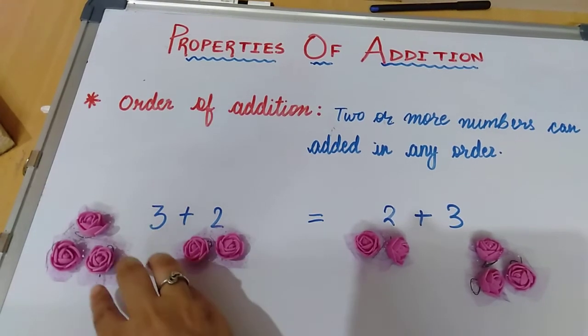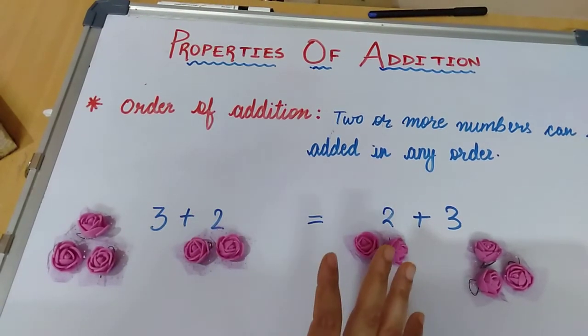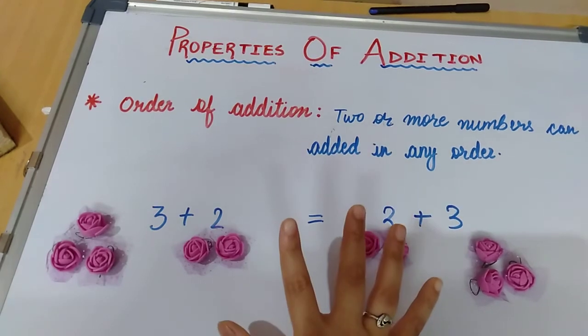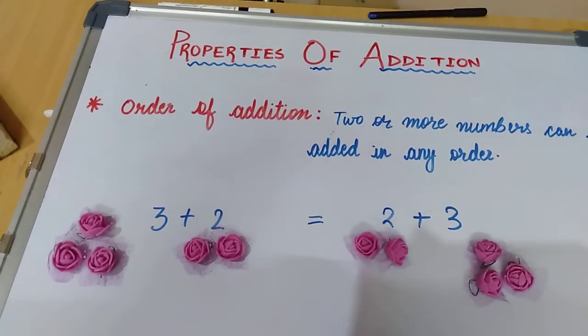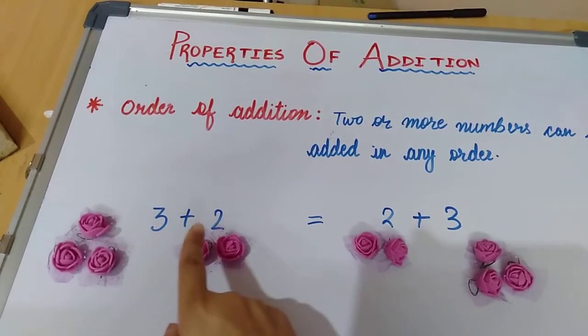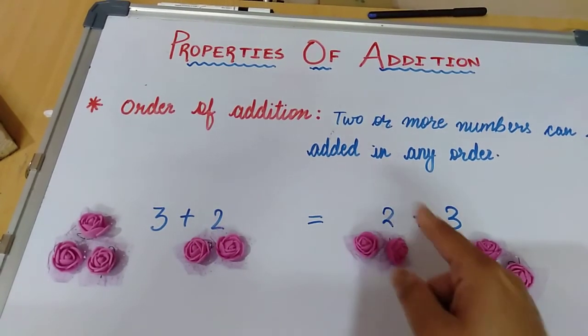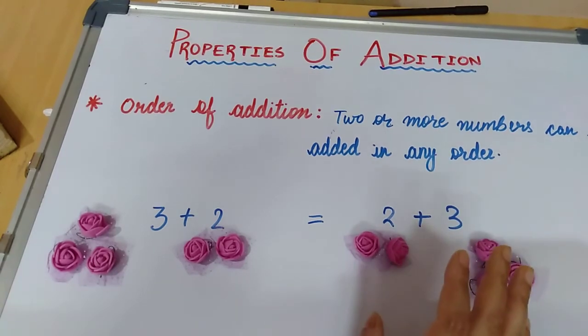The order matter nahi karta. Aap kisi bhi order mein add karo, you will get the same result. This is the order of addition. You can add three to two or you can add two to three. Is it clear to all of you?